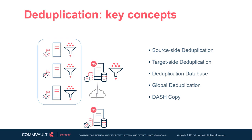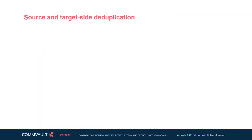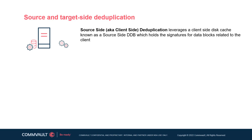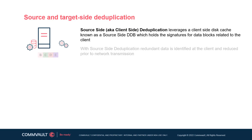Customers can also leverage hardware-assisted deduplication provided by third-party storage vendors if required. Source-side deduplication, also commonly known as client-side deduplication, leverages a client-based disk cache known as a source-side deduplication database, which contains the signatures for data blocks relative to that particular client. With source-side deduplication, redundant data is identified at the client and reduced prior to network transmission.